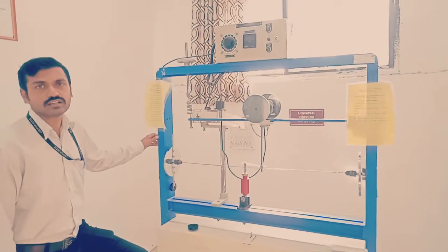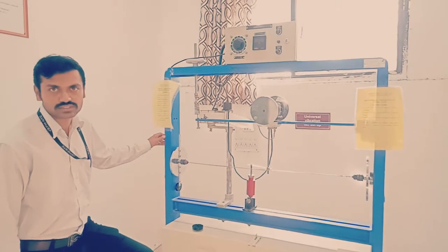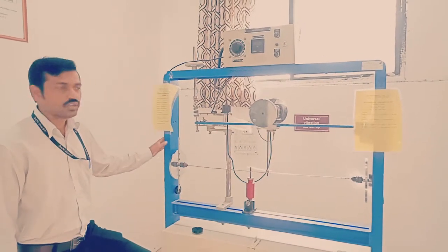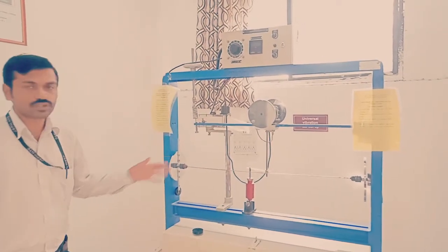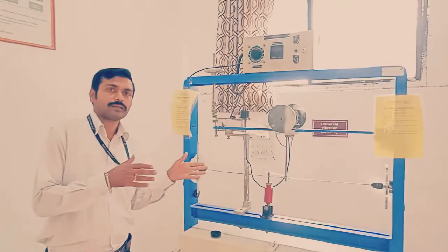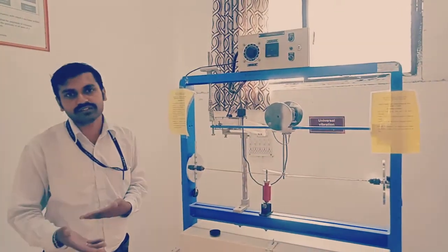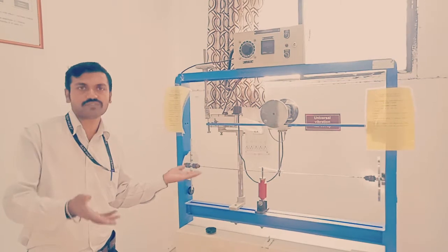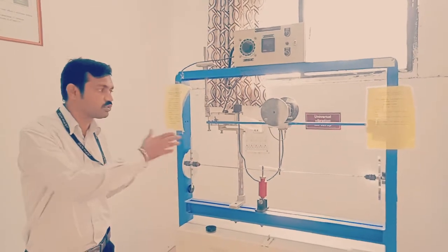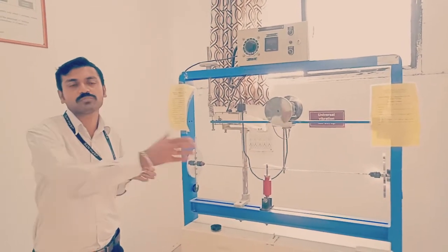The experiment title is torsional vibration of two rotor system. In this experiment, we have to compare the frequency, theoretical frequency and practical frequency of the two rotor system, and we have to find out the position of the node.